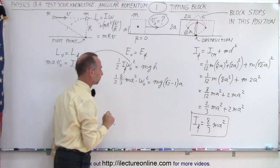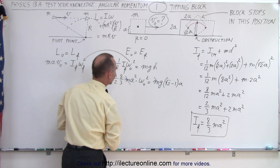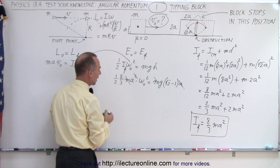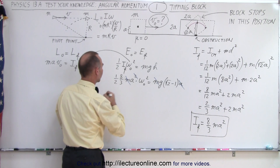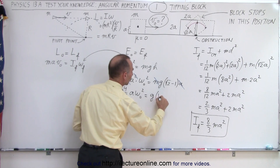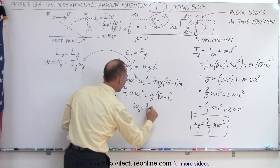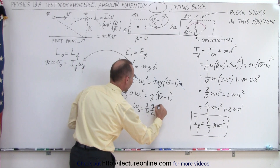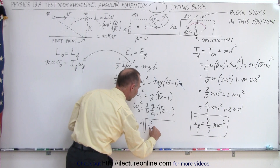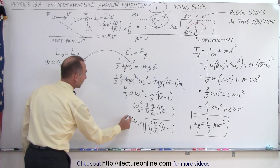So we have 4/3 · a · omega_initial² = g · (√2 − 1). Solving for omega_initial: omega_initial² = 3/4 · g/a · (√2 − 1), and therefore omega_initial equals the square root of 3/4 · (g/a) · (√2 − 1). Now we have omega_initial, which we can plug into the angular momentum equation as omega_final.